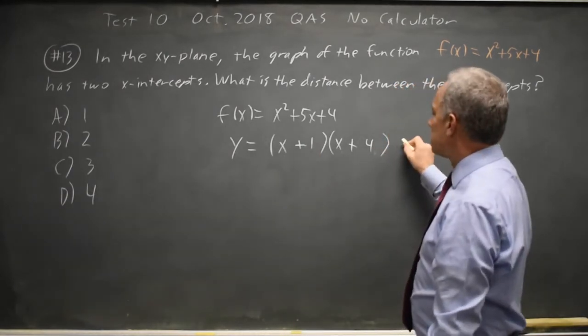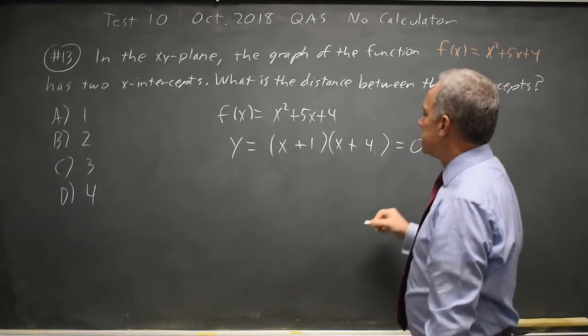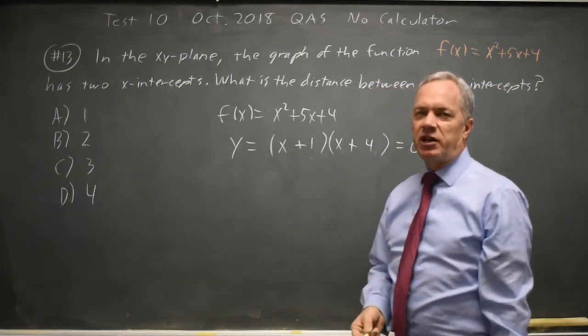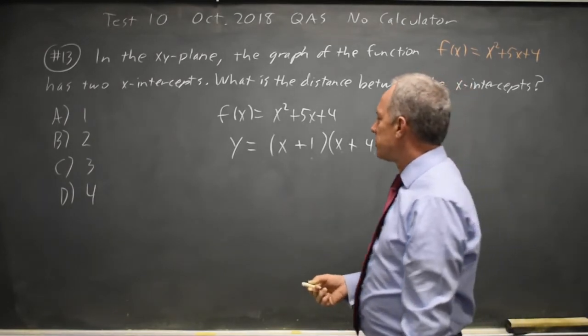The x-intercepts occur when y equals 0, so I have a product that equals 0. That's why we factored quadratics to find the zeros.